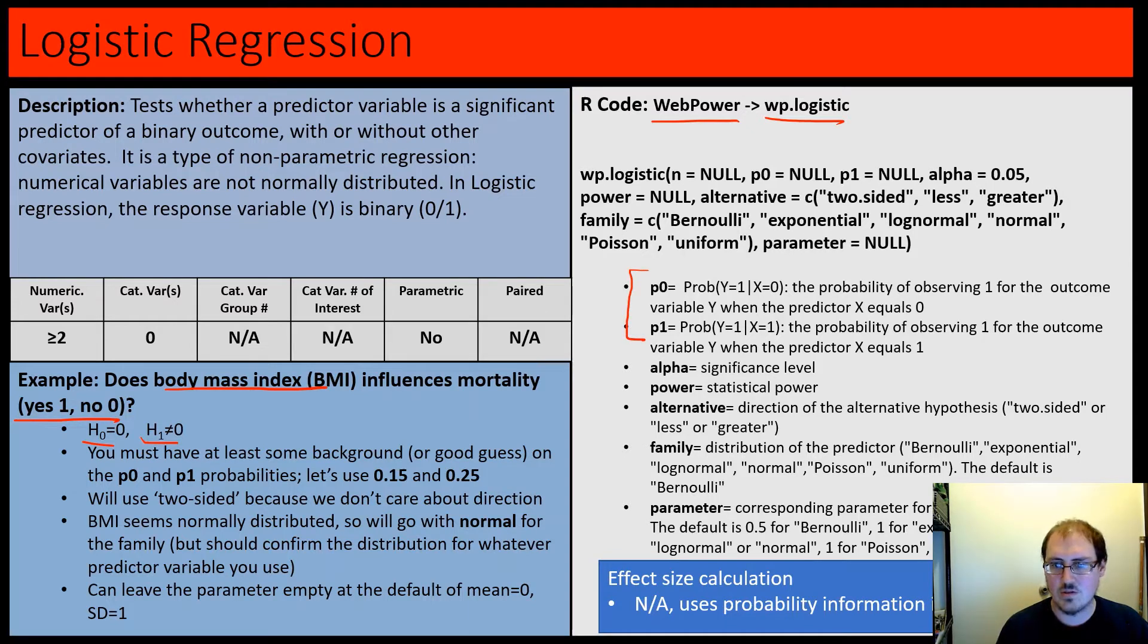p0 is the probability of observing one for the outcome variable when the predictor variable x equals zero. And p1 is the probability of observing one for the outcome variable when the predictor x equals one.